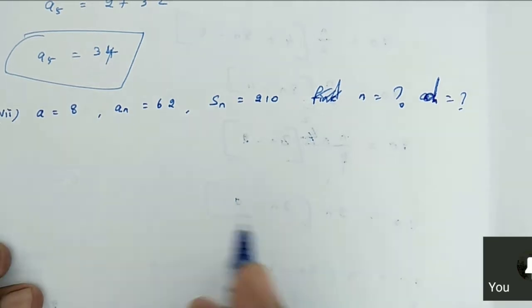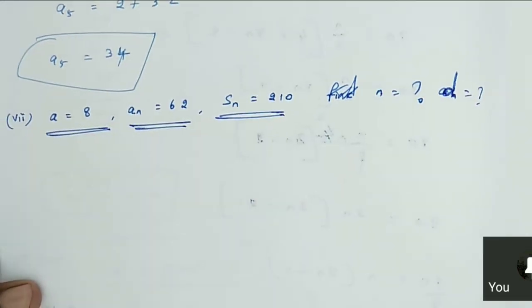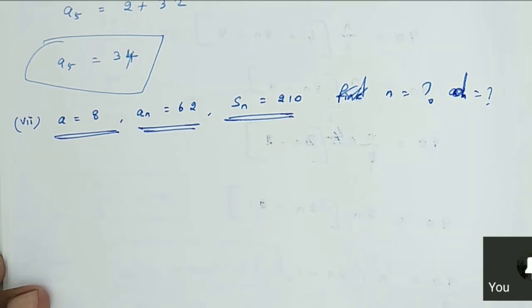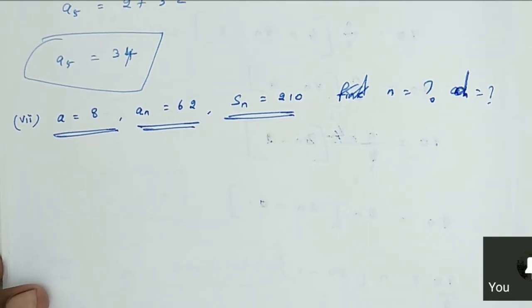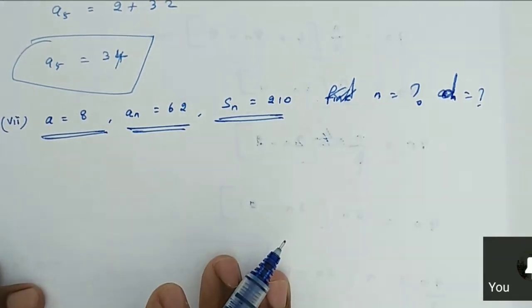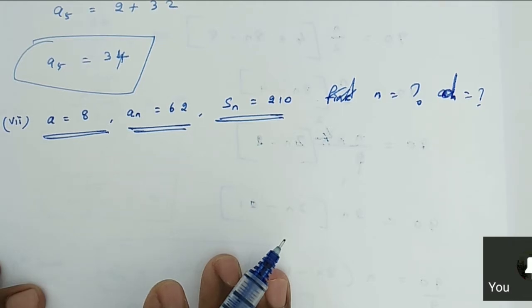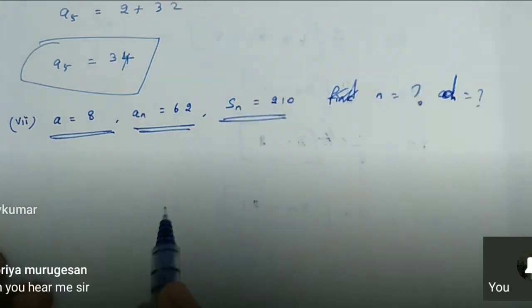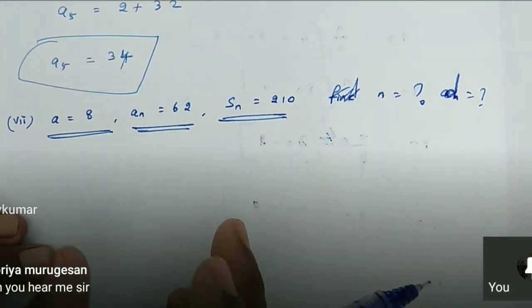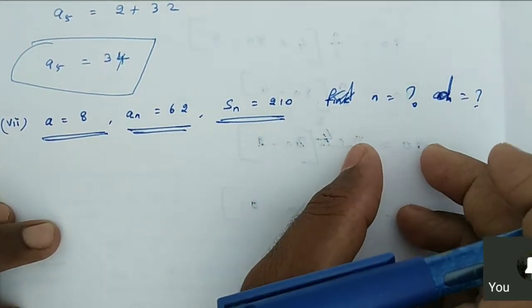Now, what are you supposed to do? Listen, here they are given A, A_n, and S. What do you suppose to do to find the N value and D value?